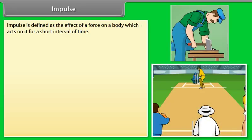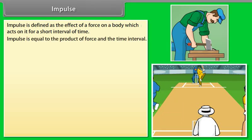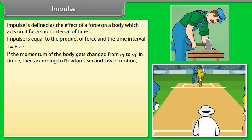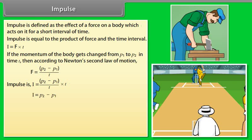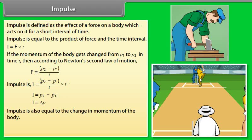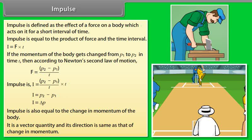Impulse is defined as the effect of a force on a body which acts on it for a short interval of time. Impulse equals the product of force and the time interval: I = F × t. If momentum changes from p1 to p2 in time t, then by Newton's second law, F = (p2 − p1)/t. Therefore, I = p2 − p1 = ΔP. Impulse also equals the change in momentum of the body. It is a vector quantity and its direction is the same as that of the change in momentum.